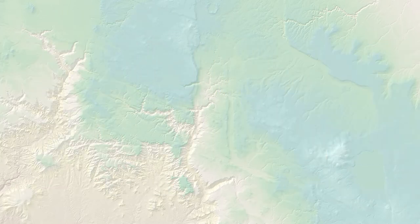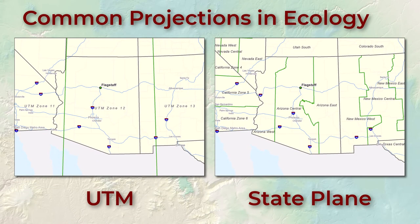In ecological research and management, most work is done in either UTM or State Plane projection. When you're working in an area smaller than a few hundred miles across, both of these projections keep you very near the lines of intersection of the cylinder and the planet, so they do a good job at maintaining shape, area, distance, and direction within the small local area.